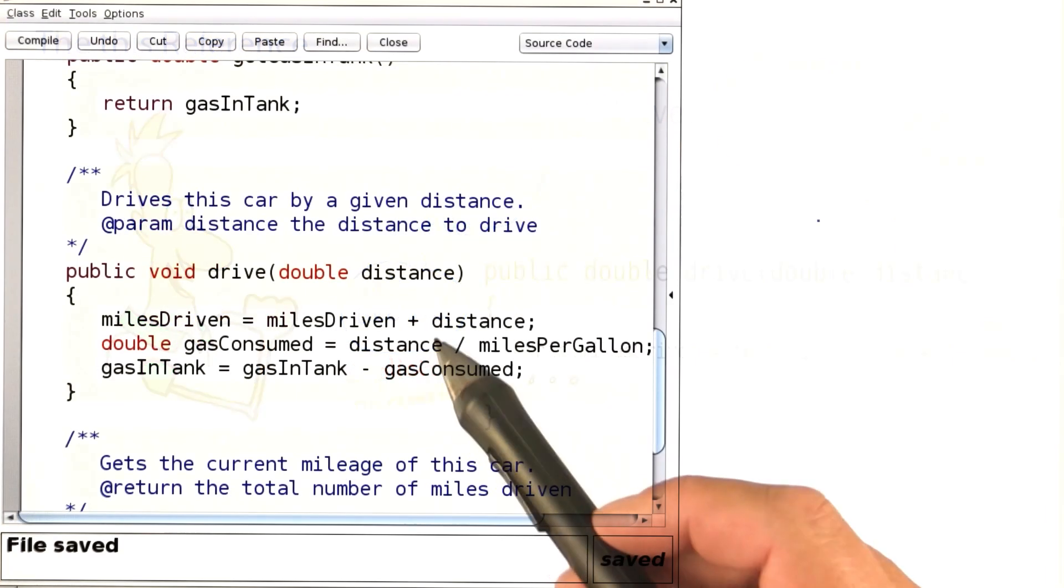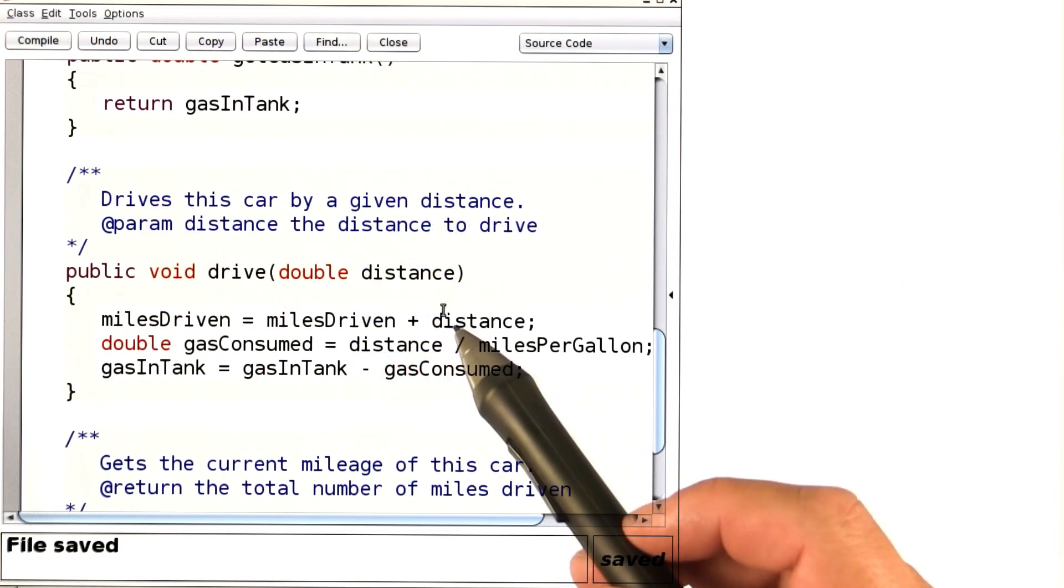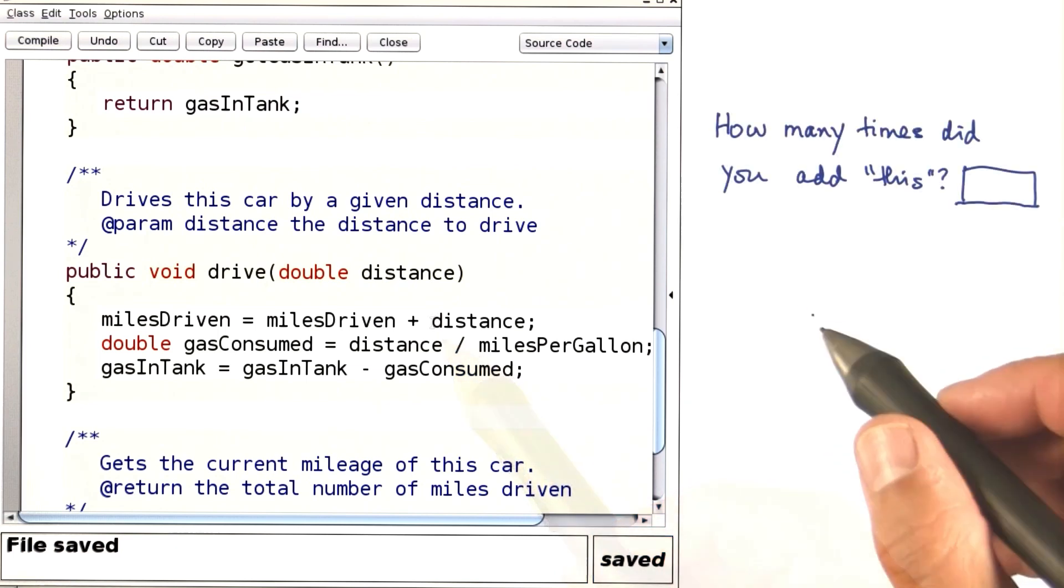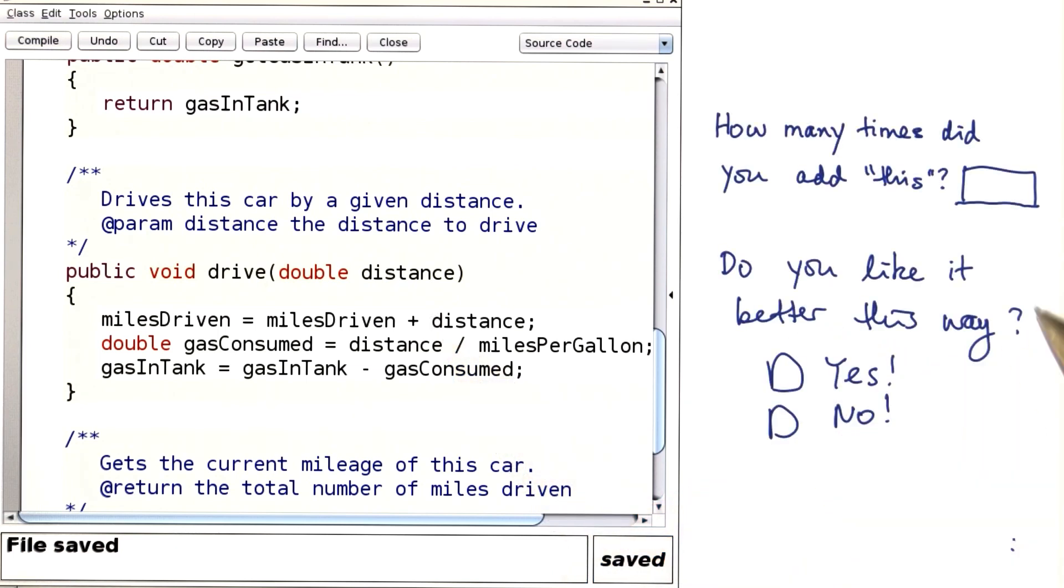Why don't you give it a try? Here in this drive method, go ahead and add this everywhere that you're allowed to do so. How many times did you get to add this? Do you like it better this way? No wrong answer, I'd just like to know.